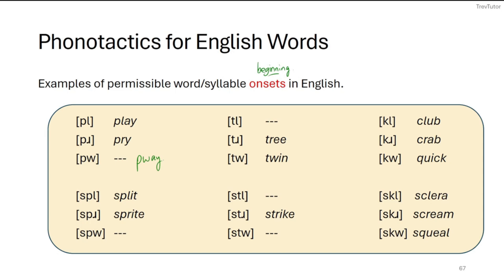In the 't' cases, we can do 'tr' and 'tw' as in 'tree' and 'twin,' but we can't do that 'tl' cluster at the beginning, though we can separate them into separate syllables — for instance, in 'bootleg,' a 't' and 'l' appear side by side, but you can't start a syllable with 'tl.' With 'k,' whether it's 'cl,' 'cr,' or 'qu,' we can do them all: 'club,' 'crab,' 'quick' — all acceptable.